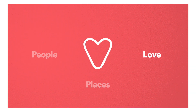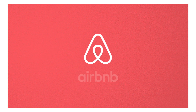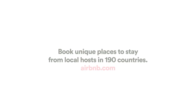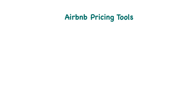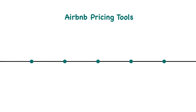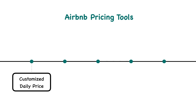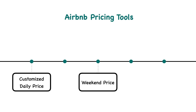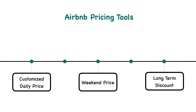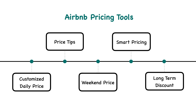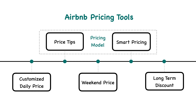As a platform provider, Airbnb does not control how our hosts set prices for their listings, but we do provide different tools to help our hosts set their prices more effectively. For example, we allow hosts to set customized daily price, weekend price, and discounts for long-term stays. We also provide hosts price tips and smart pricing, with price suggestions generated by our pricing model.